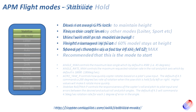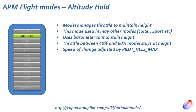Next is Altitude Hold. Flick that switch and the model will maintain its current altitude. The throttle stick works differently: in the middle dead band — roughly 40 to 60 percent — the model maintains its height. Above 60 percent it will climb, below 40 percent it will descend. You can change the rate of altitude change using the pilot_velz_max parameter. It uses the barometer for this, which is pretty good in the APM, but make sure it's covered with a little bit of foam to reduce randomness.